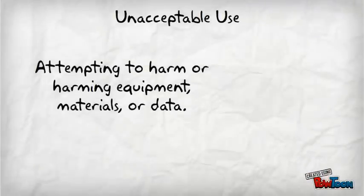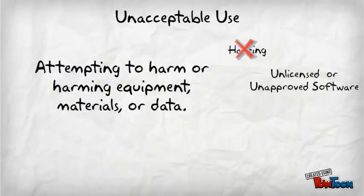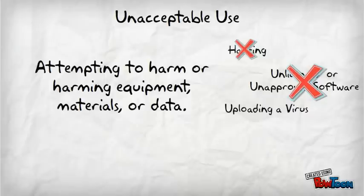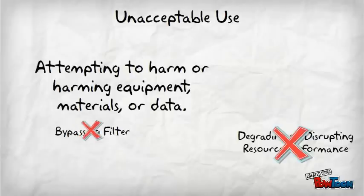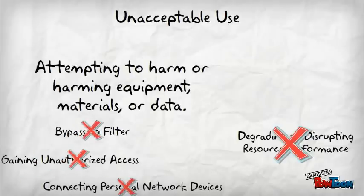Attempting to harm or actually harming equipment, materials, or data are considered unacceptable use of technology resources. This includes hacking, installing unlicensed or unapproved software, uploading a virus, degrading or disrupting resource performance, bypassing the content filter, gaining unauthorized access, or connecting personal network devices.